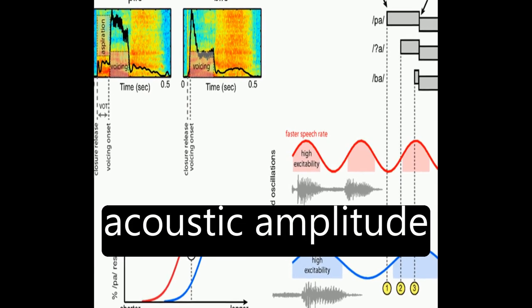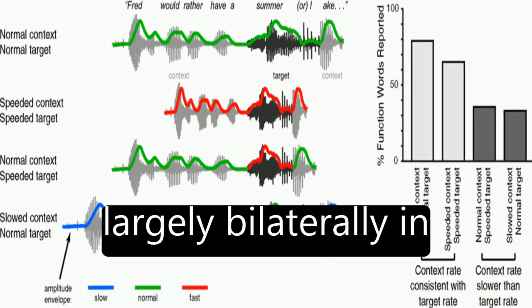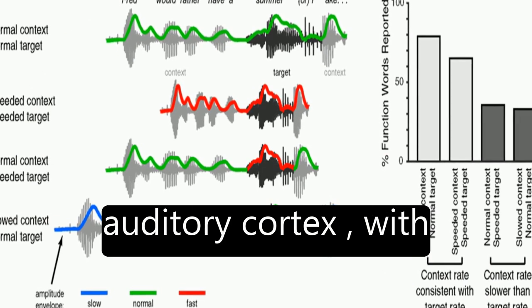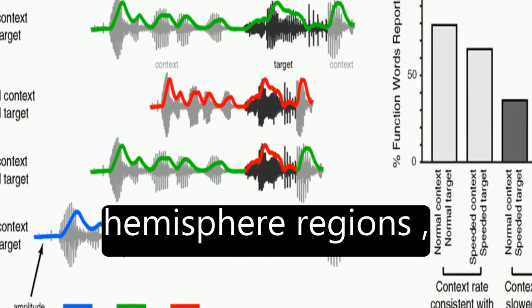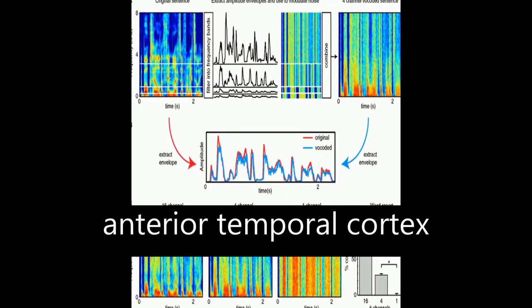Neuroanatomically, acoustic amplitude modulations are processed largely bilaterally in auditory cortex, with intelligible speech resulting in additional recruitment of left hemisphere regions, including lateral anterior temporal cortex.